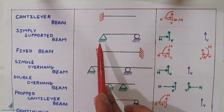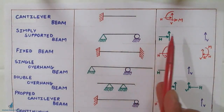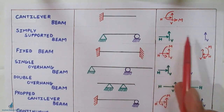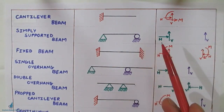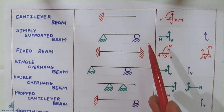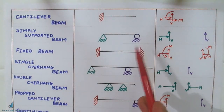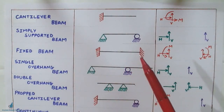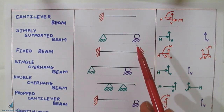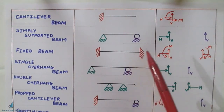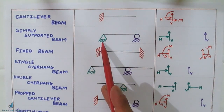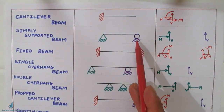If both sides are hinged, the reactions become: horizontal and vertical for one hinge, and horizontal and vertical for the other — that's four reactions total, which makes it an indeterminate structure. So to have a determinate structure, we use one hinge and one roller on the other side.